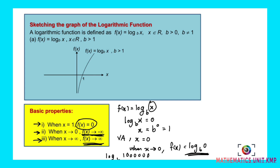Understand? Only three steps. Now we go to the sketching graph. First step: plot the point. Second step: plot the vertical asymptote. As x is approaching 0, the value of y will be approaching negative infinity — going downward — so the graph goes down and won't touch x equals 0. And when x is approaching positive infinity on the right, the value of y will be approaching positive infinity — going upward.